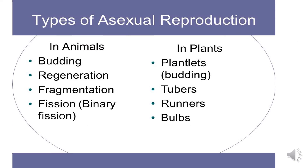Types of asexual reproduction: we will study about asexual reproduction. Asexual reproduction in animals is found in the form of budding like hydra, regeneration, fragmentation, fission, and binary fission. In plants, asexual reproduction includes budding, tubers, runners, and bulbs.